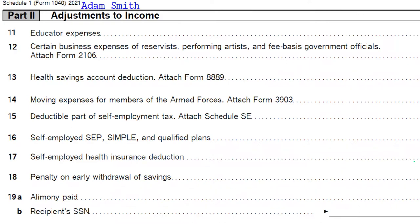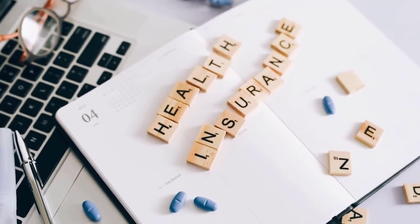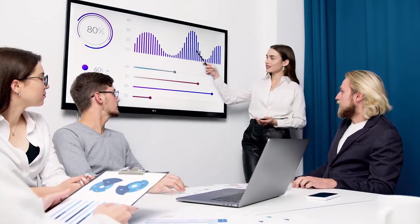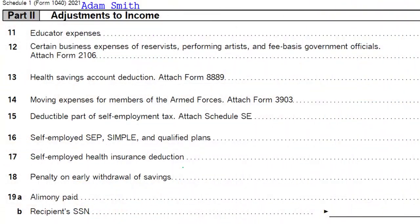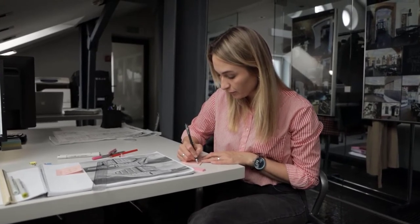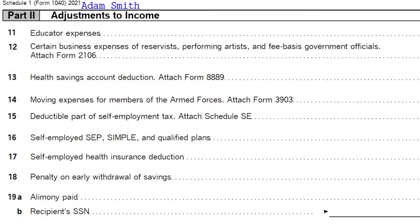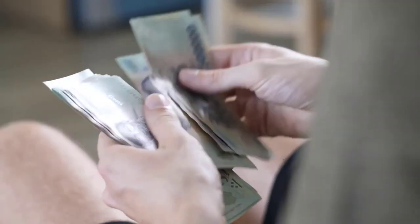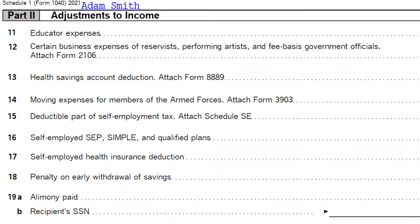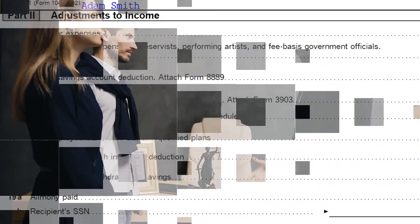When you think about the self-employed health insurance in general, you can compare what the IRS is trying to do similarly to a C corporation. They're trying to mirror an employment type of situation because health insurance is sometimes a benefit given by a company. With self-employment tax, they're basically treating the self-employed person — say a sole proprietorship with no employees — still as an employee, meaning net income is subject to payroll taxes, paying both the employee and employer portion of Social Security and Medicare.